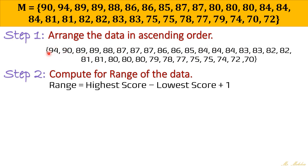And what is our lowest score? Our lowest score is 70. Now, we can start with our solution. Range is equal to our highest score is 94 minus our lowest score is 70, and then plus 1 always. Okay, so with that, we would have 94 minus 70, it's 24, and then plus 1. So of course, we would have this is equivalent to 25. Therefore, our range is 25.